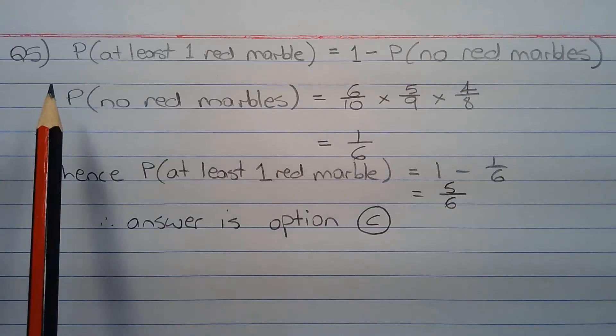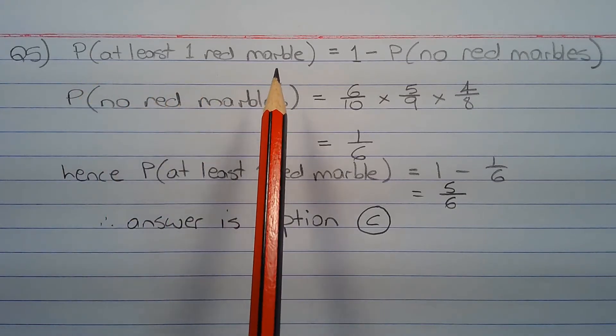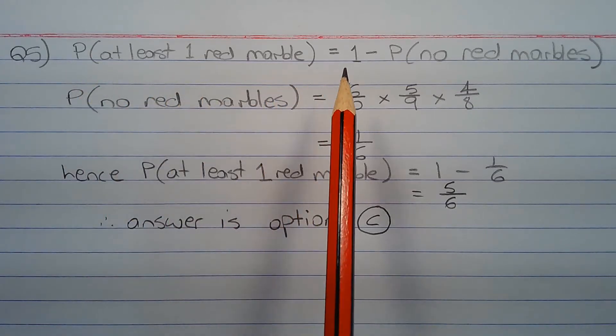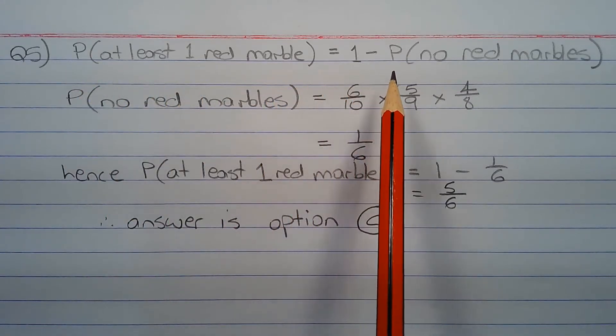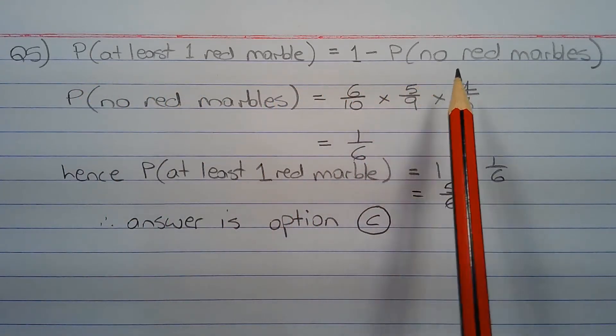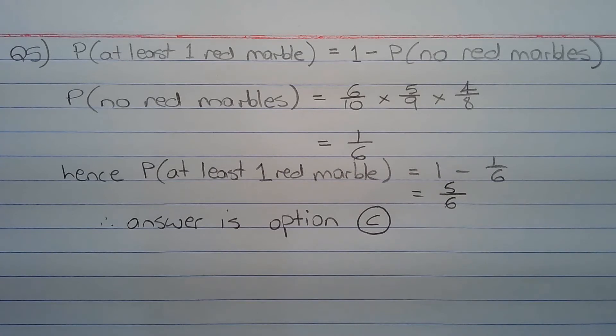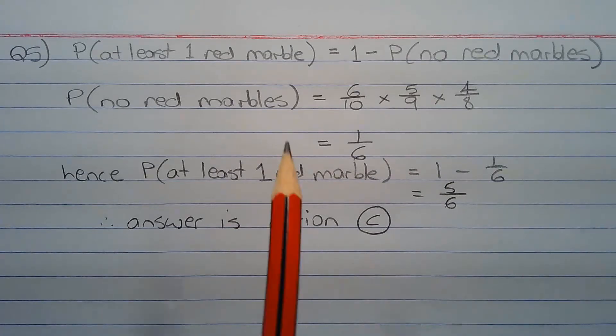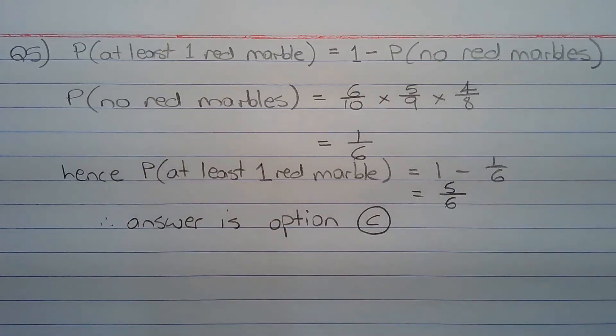The probability of selecting at least one red marble equals 1 minus the probability of selecting no red marbles, or all blue marbles, since these two events are complementary.